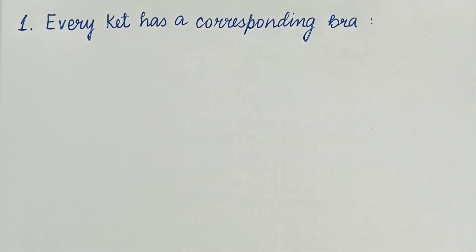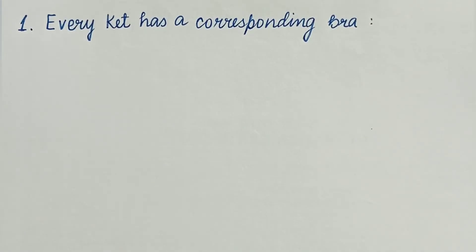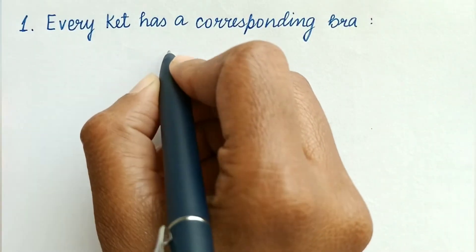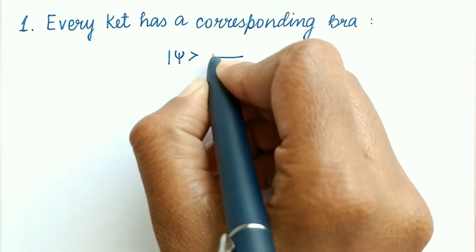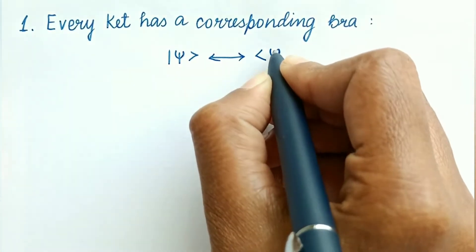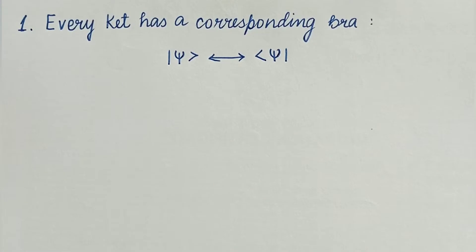Let's begin with the first point: every ket has a corresponding bra. It is a very basic property. To every ket there corresponds a unique bra and vice versa. There is a one-to-one correspondence between bras and kets.